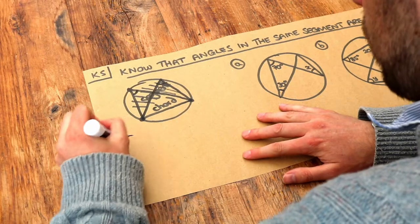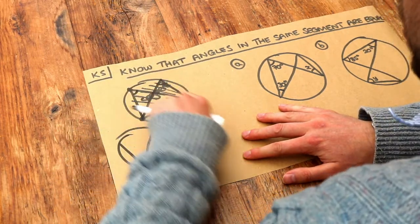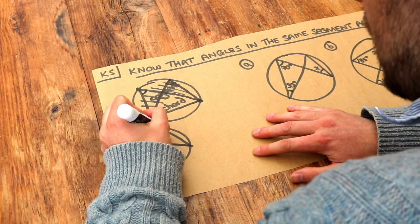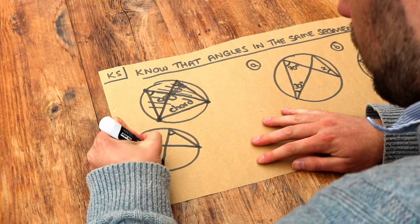And notice it gives you this kind of bow tie type shape. So if I draw this kind of shape here, the kind of bow tie type shape, the angles at the same end of the bow tie will be equal. And similarly these angles at the bottom will be the same.